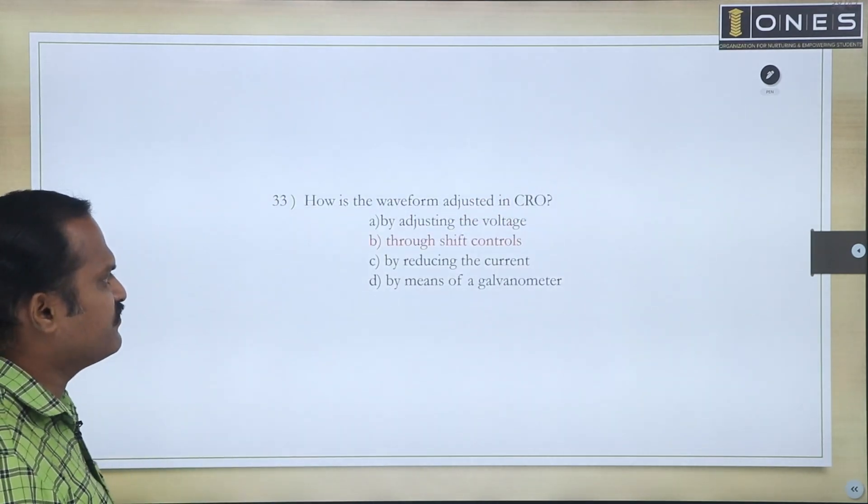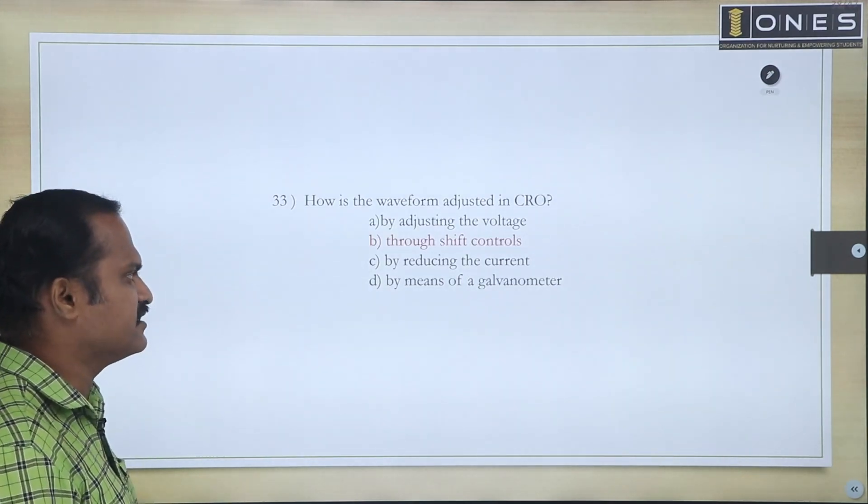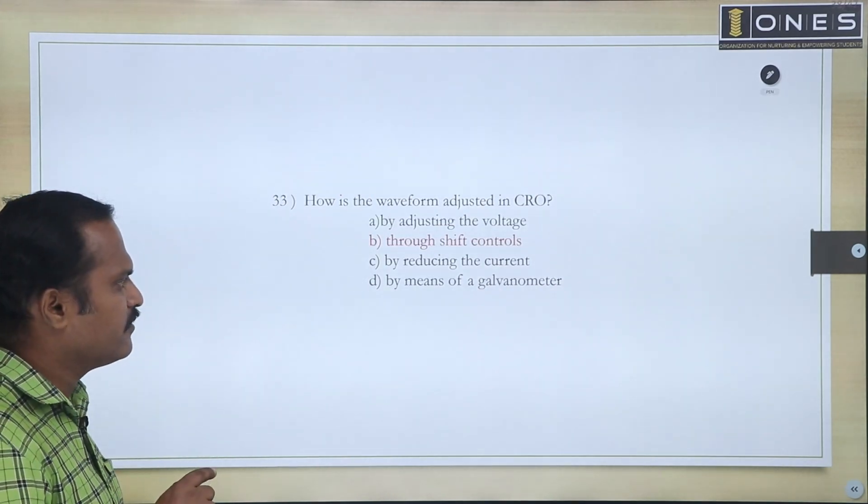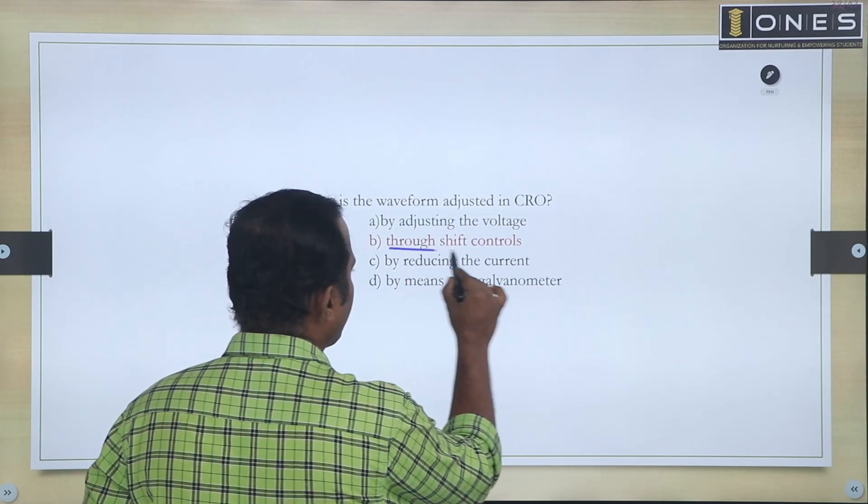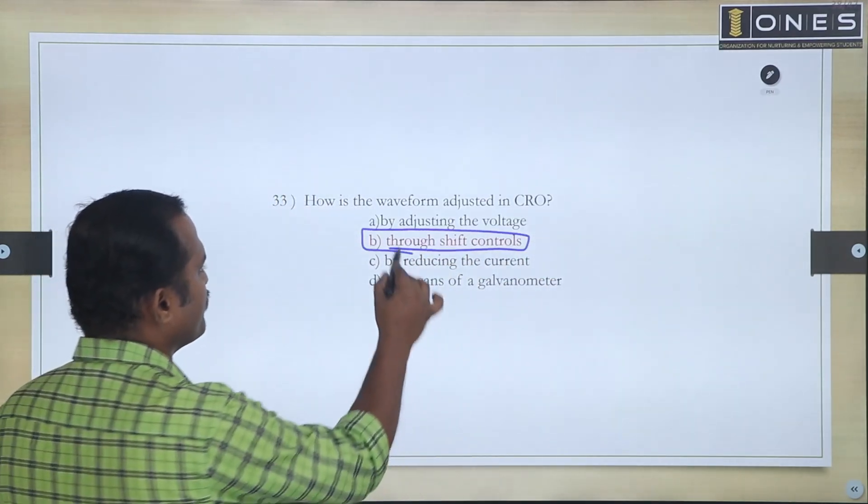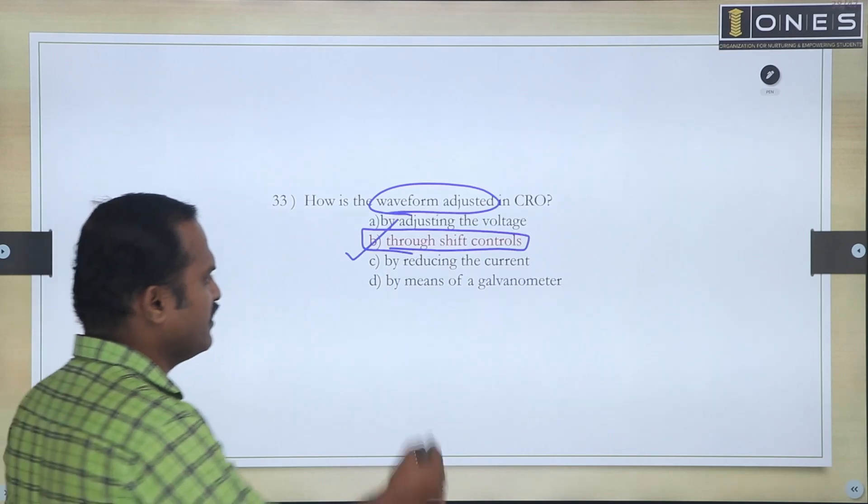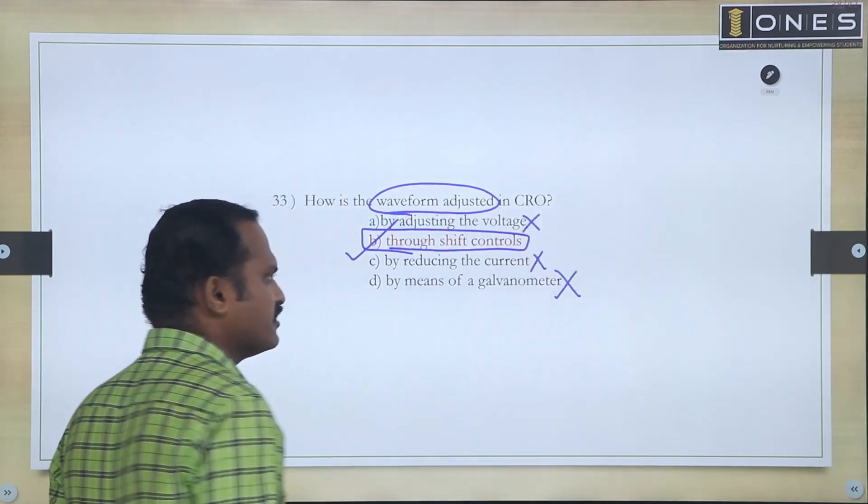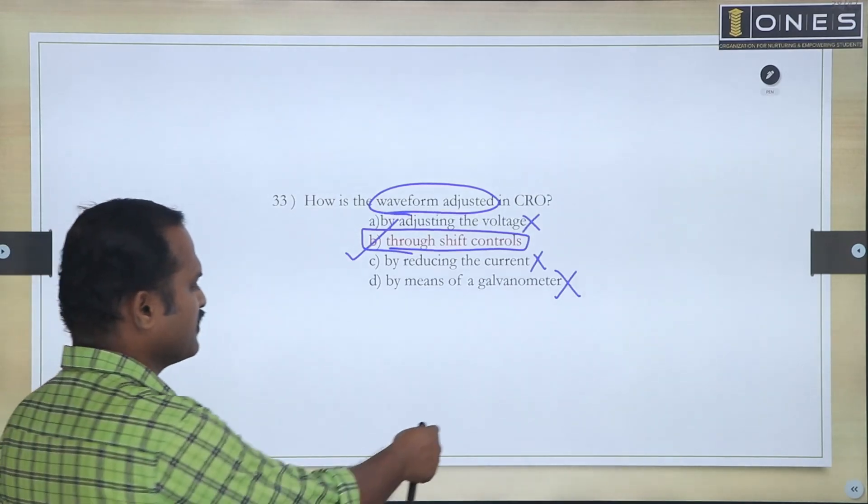Next: How is the waveform adjusted in CRO? It is mainly by adjusting the shift controls. Through shift control, you are able to adjust the waveform. Waveform adjustment in CRO is through the shift controls. Because in other cases, like galvanometer case, reducing current is not under our control, adjusting the voltage is not under the control. So B choice, that is through the shift controls of the CRO.